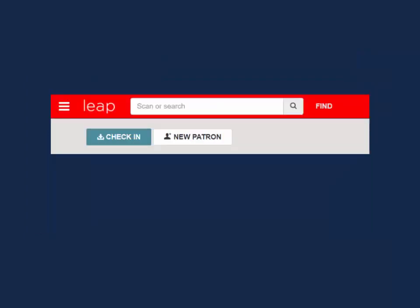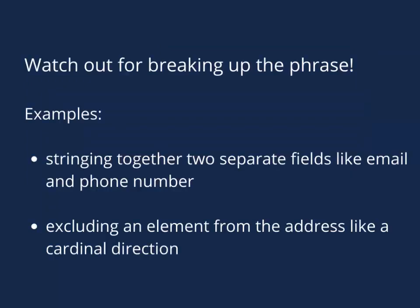The Quick Search bar is also performing a phrase search when looking for patron records. This means you will not be able to search using both the email and phone number at the same time, for example. If searching for an address, the inclusion or exclusion of a unit number or cardinal direction may affect which results are returned.